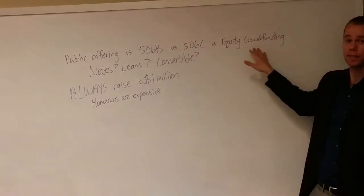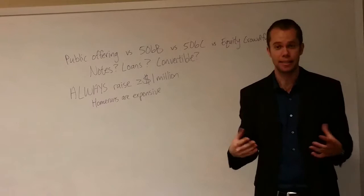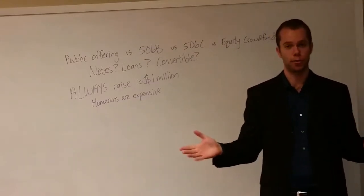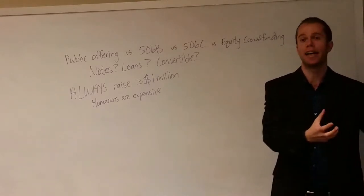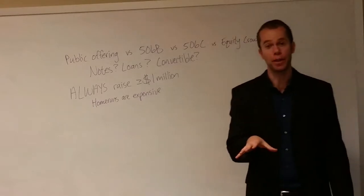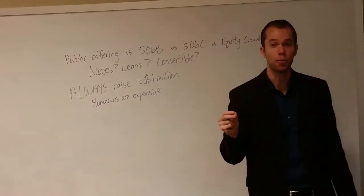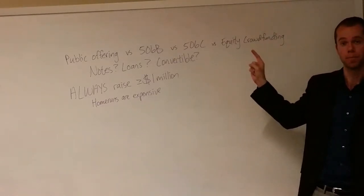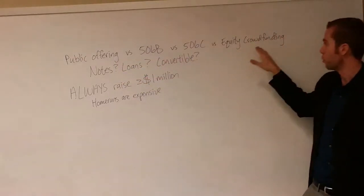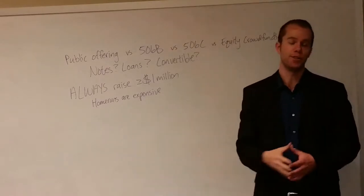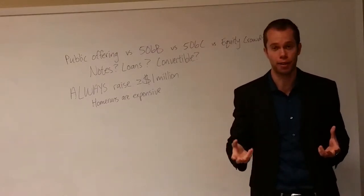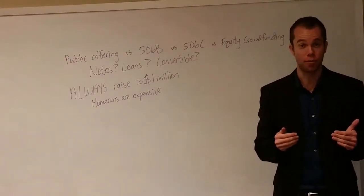And then there's equity crowdfunding. This is brand new — it hasn't even been out for a year yet and only a handful of companies have done it successfully. When you hear crowdfunding you might think Kickstarter, where you give money to a company and you end up getting part of a product later on. With equity crowdfunding you're giving money and then you own part of the company. You're allowed to take unaccredited investors, but there's a whole slew of rules to meet. There's what's called a PPM — a private placement memorandum — that can cost anywhere from fifteen to fifty thousand dollars for an attorney to handle.